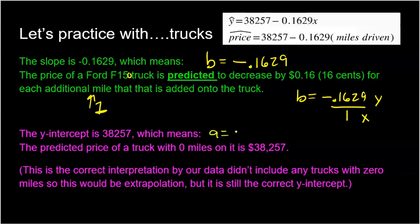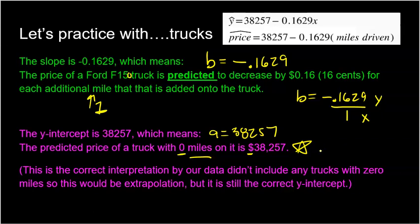What about the y-intercept? The y-intercept is A, which is 38,257. This is what we predict a truck with zero miles to be worth — the predicted price of a truck with zero miles is $38,257. Notice the units: miles and dollars. Now, this might not make a whole lot of sense because in our truck data, none of the data was near zero — our lowest was about 8,000 miles. So predicting at zero miles is extrapolation, outside our data, and may not make sense in context.